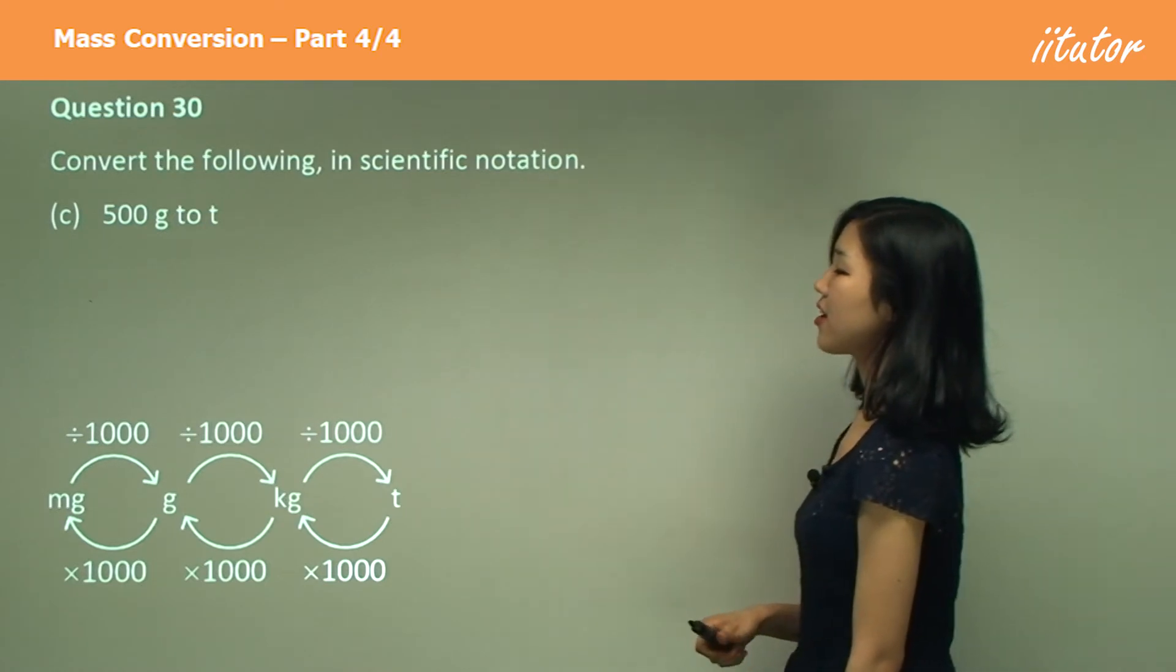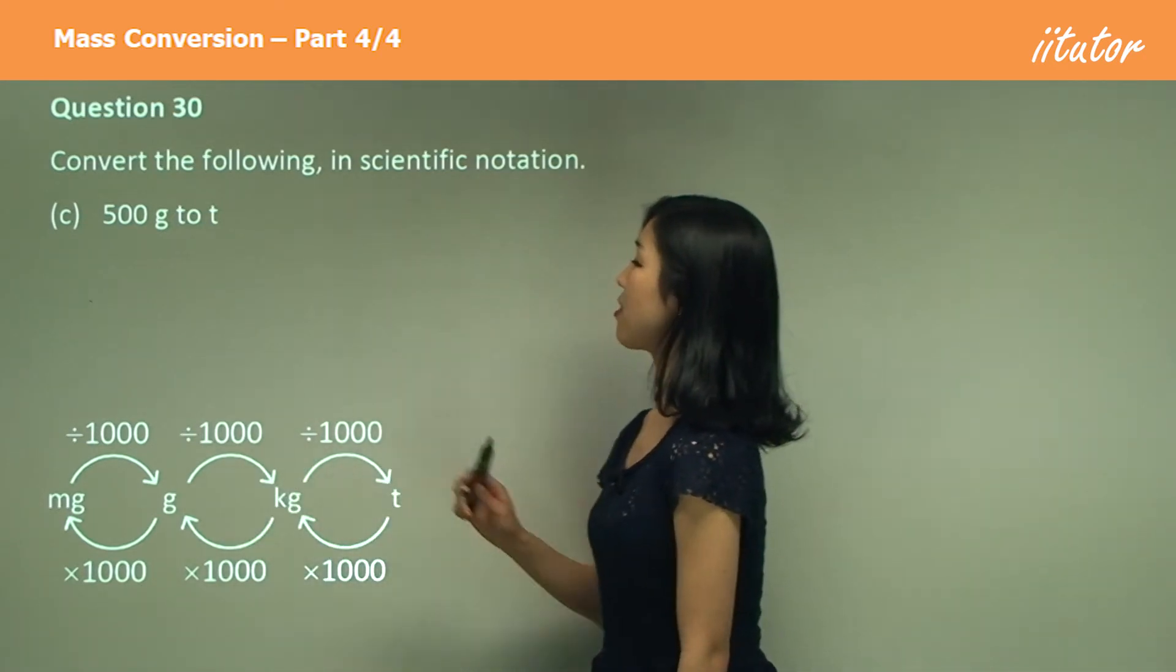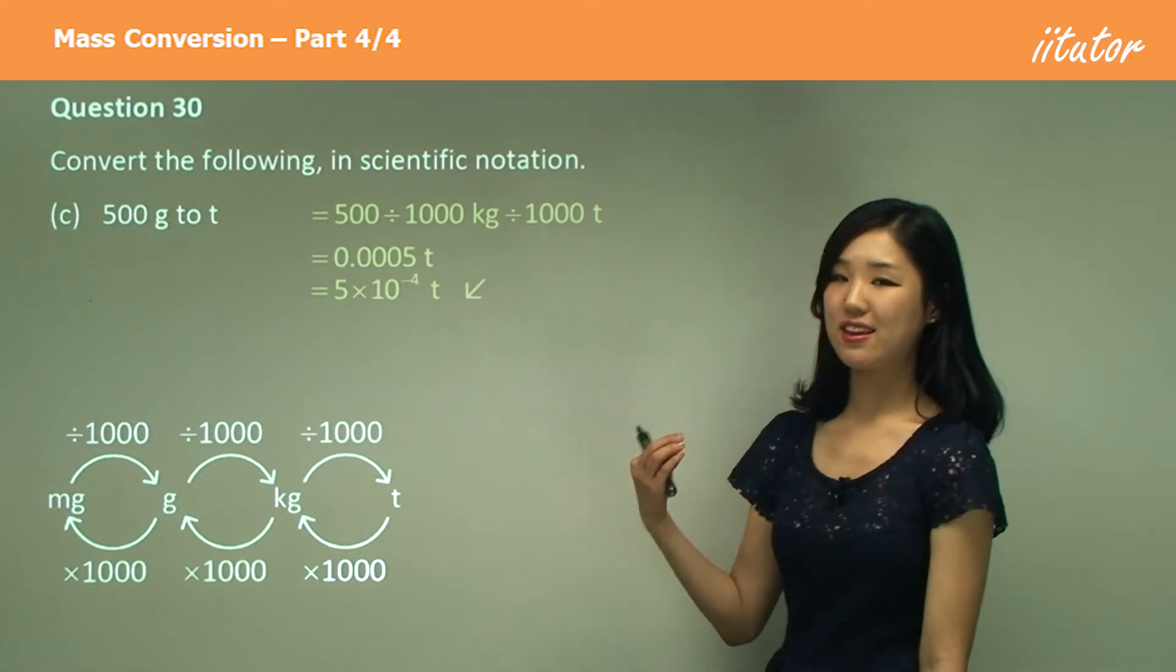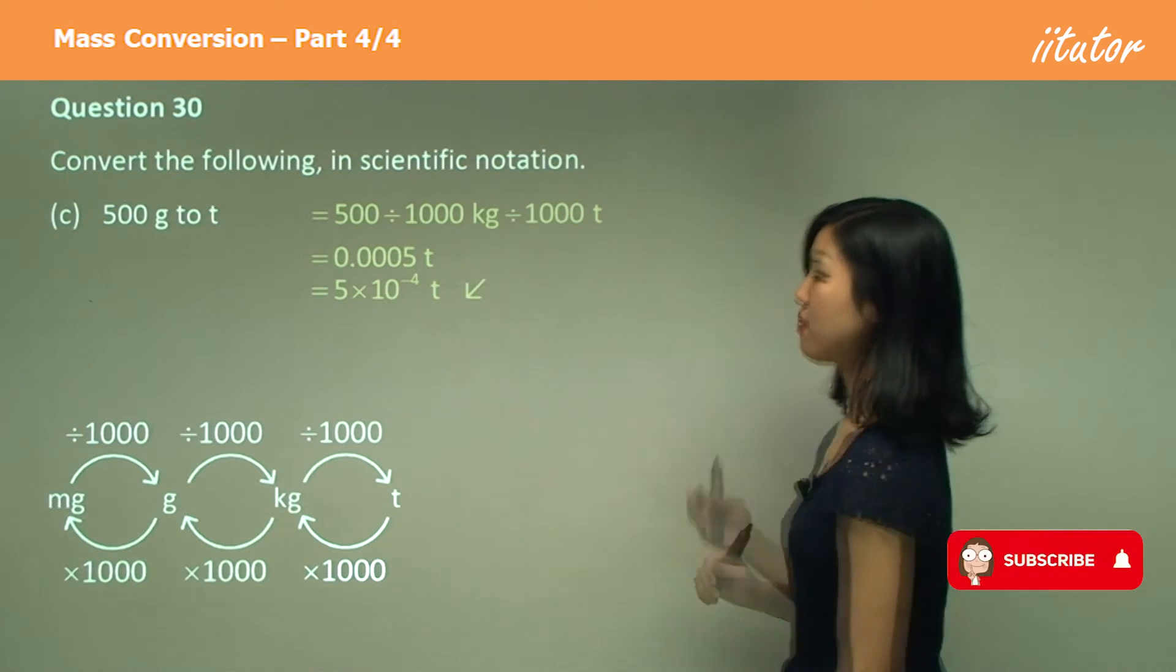Grams to tons, divide by thousand three times, which gets you this kind of decimal. And then ten to the power of negative four, because we're going backwards, negative four times.